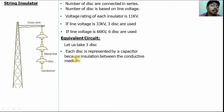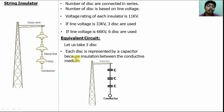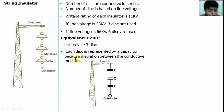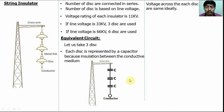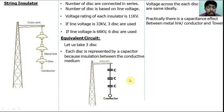We represent each disk as a capacitor. With three disks, we have three capacitances, all of the same material, so capacitance value is C. If the line voltage is 33 kV, in the ideal case it shares 11 kV equally across each disk.